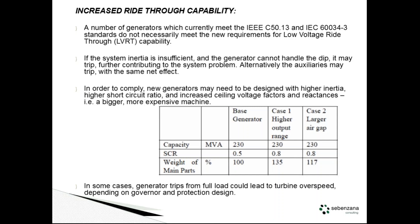Something else, possibly more a problem with smaller and older machines, is what happens when the generator trips from full load. If your protection is not properly set up, the turbine overspeeds — and we've seen that with non-Eskom customers. Every time you do that, the overspeed puts extra stress on the generator and turbine more than it's designed for. It can handle it a few times, but if you keep doing it, it's going to cause long-term problems.